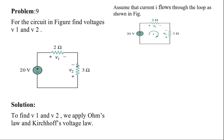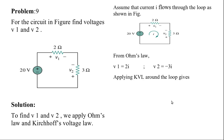So current i is flowing in the circuit. From Ohm's law you can find V1 is equal to 2 times i — the symbol here is positive. V2 is equal to minus 3 times i. If you are applying KVL, you write the equation as: minus 20 plus V1 minus V2 equals zero.